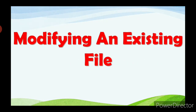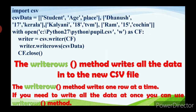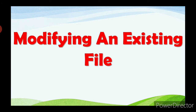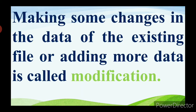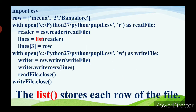The next one is modifying an existing file. Making some changes in the data of an existing file or adding more data is called modification. Here you see the program on page number 256. Lines = list(reader) stores each row of the file in a list. The statement lines[3] = row changes the third row of the file with the new content.